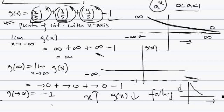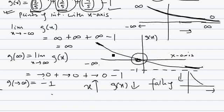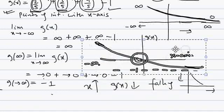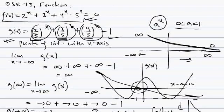The graph of g(x) starts at +∞ as x → -∞, continuously falls, and approaches -1 as x → +∞. Since it is continuously and strictly falling — no breaks — it must cross the x-axis exactly once. Therefore g(x) has only one point of intersection with the x-axis, meaning the equation has exactly one root.